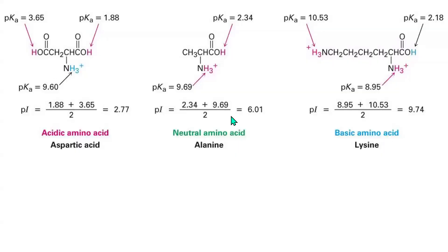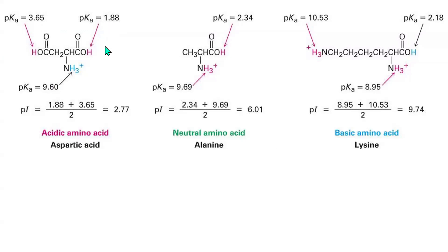These are the three different cases in a situation where you have an amino acid with an R-group carboxyl group change, like in the case of aspartic acid. We have a pKa at lower pH of 3.65, and we have it at a pKa of 1.88 — that is the R-group carboxyl group.